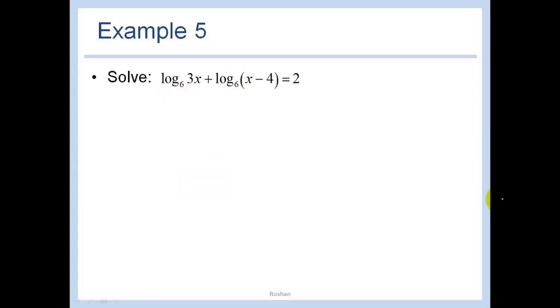In this problem here I'm going to use what we learned in the last section. When I have log base 6 of something plus log base 6 of something else, I can multiply those two things because I have the same basis. So I'm going to just condense the left side right now like what we were doing in the last lesson equals 2. So I have log base 6 of 3x squared minus 12x is equal to 2.